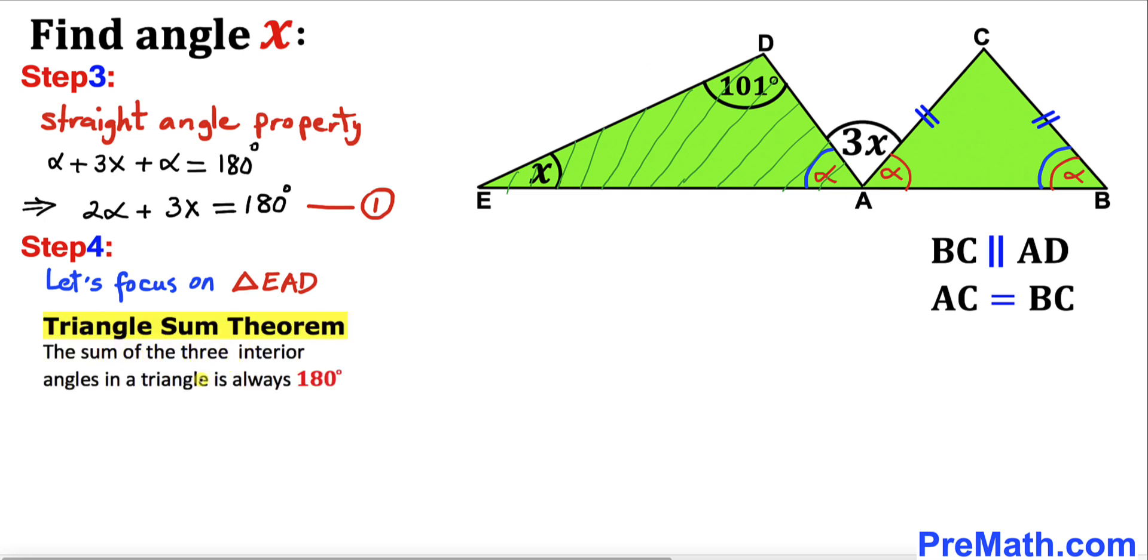Let's recall the triangle sum theorem: the sum of the three interior angles in a triangle must be 180 degrees. So that means this angle plus this angle plus this angle has got to be 180 degrees.